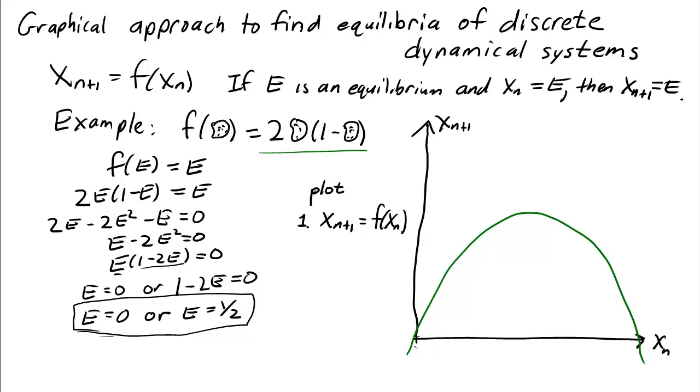In the plot, the origin is right here, and x_n = 1 is right here. The second thing we plot is the diagonal line x_{n+1} = x_n. I'll draw that line in red.